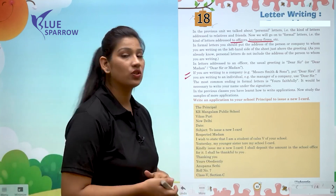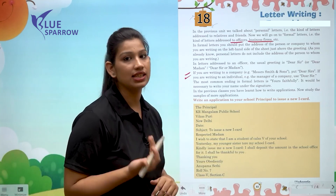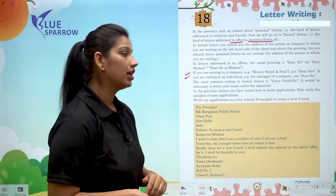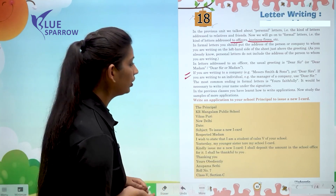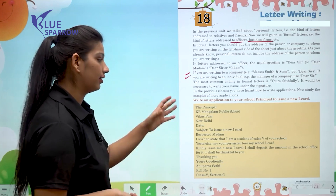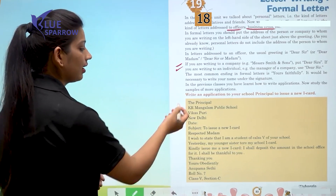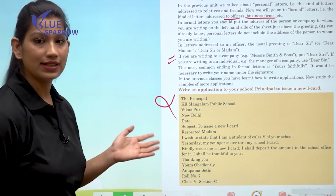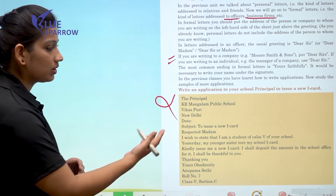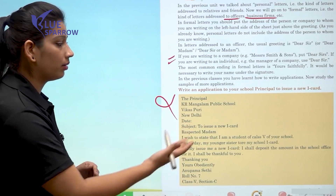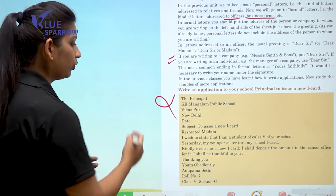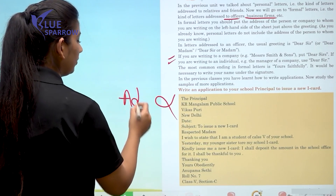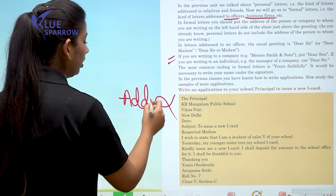It is necessary to write your name under the letter signature. Let us see the example — here the address is written on the left side: 'The Principal, K.R. Mangaram Public School, Vikaspuri, New Delhi.' You can see the address is written on the left side.